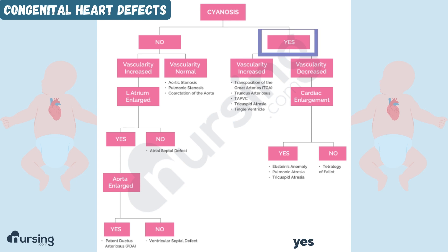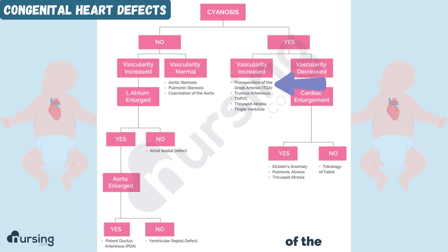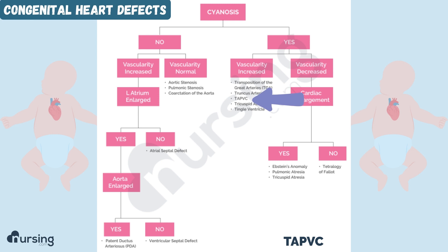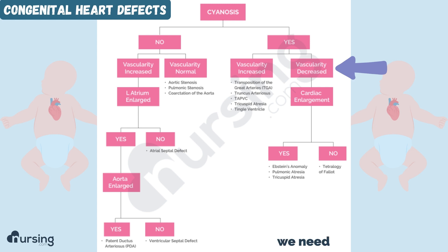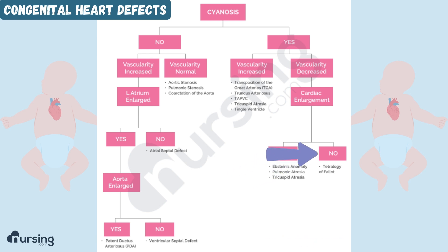Let's now go to the yes side — so yes, this infant has cyanosis. Is the vascularity increased? If the vascularity is increased, then this could be transposition of the great arteries (TGA), truncus arteriosus, TAPVC, tricuspid atresia, or single ventricle. If vascularity is decreased, then we need to ask if there's cardiac enlargement. If yes, it could be Ebstein's anomaly, pulmonic atresia, or tricuspid atresia. If cardiac enlargement is no, then we know that we're dealing with tetralogy of Fallot.